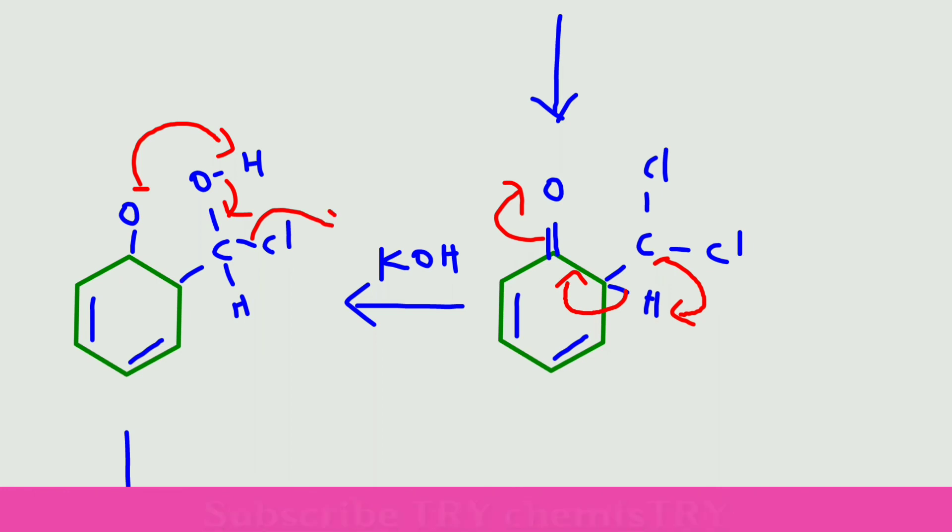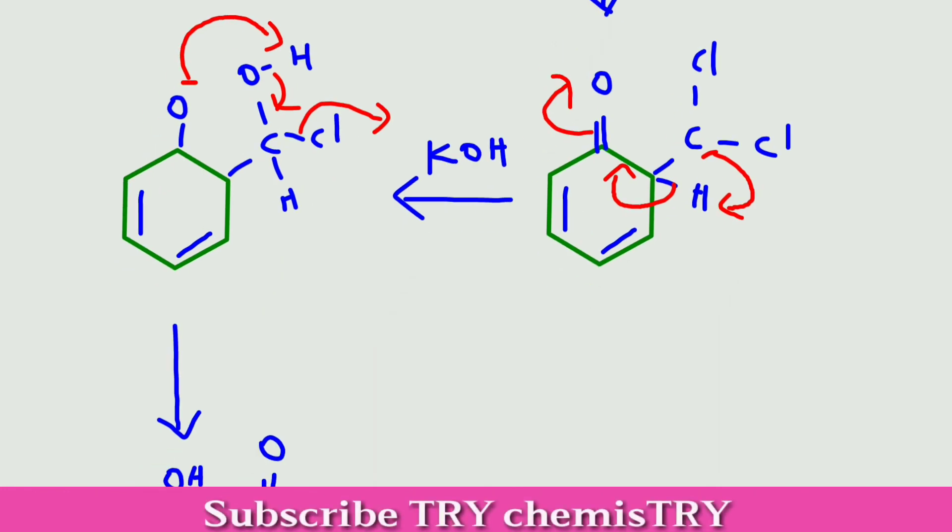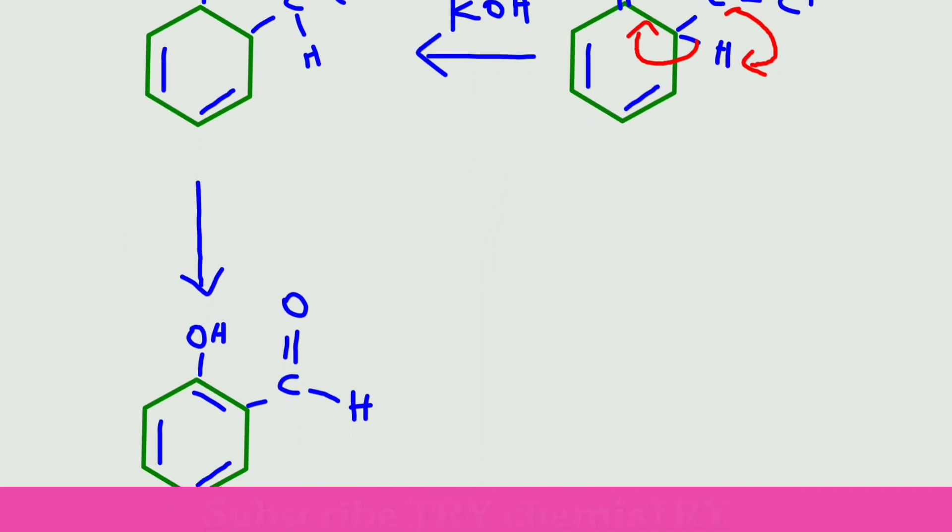In the next step, the Cl minus comes out in the form of Cl minus. Finally, we can get salicylaldehyde.